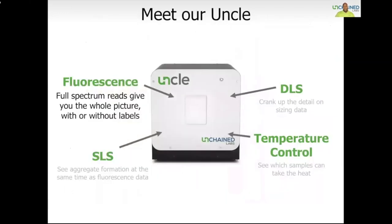The UNCLE platform is our answer to the protein characterization question. It offers an easy-to-use, simple, and sophisticated solution to life sciences. UNCLE is an all-in-one stability platform built for biologics characterization. It uses two lasers for either label-free protein intrinsic fluorescence or for dye-based fluorescence. With full-spectrum fluorescence, UNCLE opens you up to many possibilities — one can easily characterize the conformational stability of proteins while simultaneously measuring aggregation. With the addition of DLS as a detector, the stability of your proteins can be fully and easily characterized.